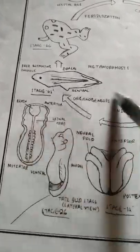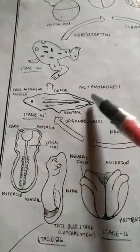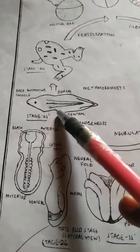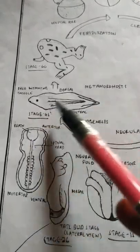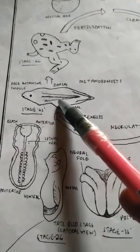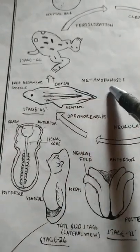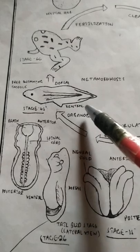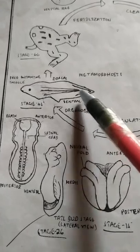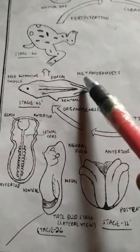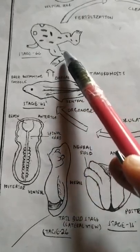This completes the pre-embryonic development. Now comes the post-embryonic development, which mainly involves metamorphosis. A free-swimming tadpole is formed, with prominent eyes, internal ears, external ears, and tail formation. This free-swimming larva is then developed into a frog through the process of metamorphosis. I have already done a video on metamorphic events in frog — the link will be in the description box.